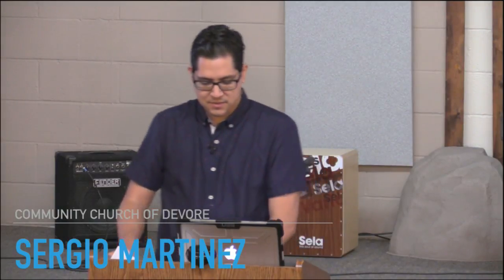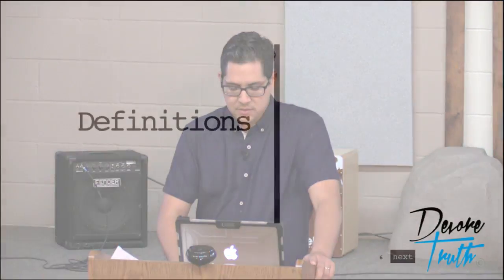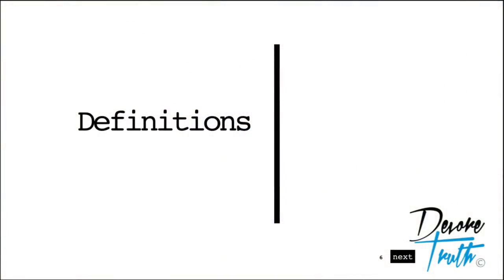So, some basic definitions. The first is the simple meaning, and we already kind of went over that. Then there's the deeper meaning. There's analogy, typology. There's patterns in Scripture. There's multiple meanings to Scripture. And then there's connections of words or phrases. If you can remember these things as you're reading Scripture, it really helps in understanding it.